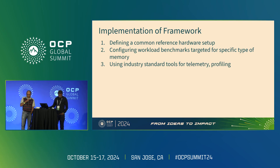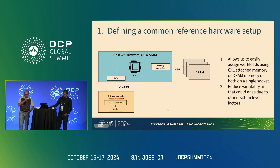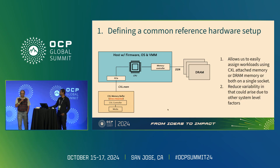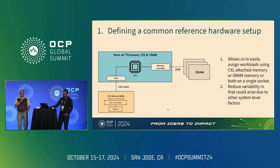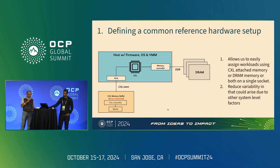One such reference framework could look like this: we use a single-socket system, we have attached CXL, and we have DRAM. This allows us to assign workloads easily to CXL-attached memory on one socket, and we can reduce any kind of variability that arises when we make the system more complex. So this is one such reference framework we could look at.